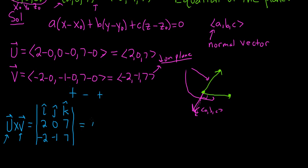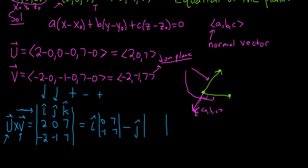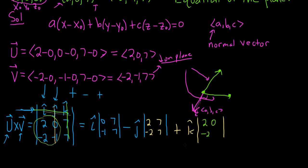Expanding along the first row: positive i-hat times the determinant of the submatrix with first column and first row crossed out, giving |0, 7; −1, 7|. Then minus j-hat times the determinant with second column crossed out, giving |2, 7; −2, 7|. Then plus k-hat times the determinant with the third column crossed out, giving |2, 0; −2, −1|. These 2×2 determinants are called minors.